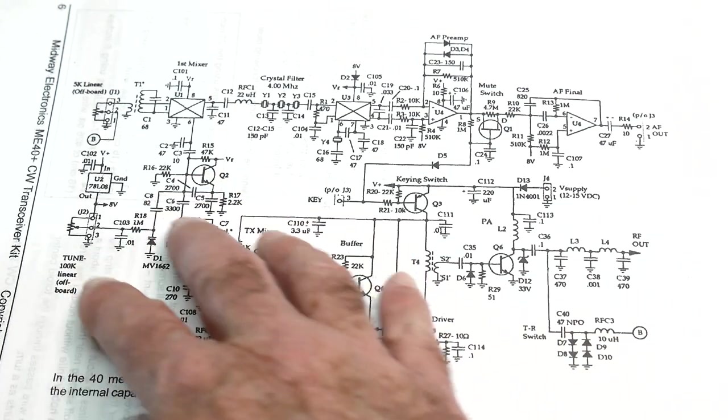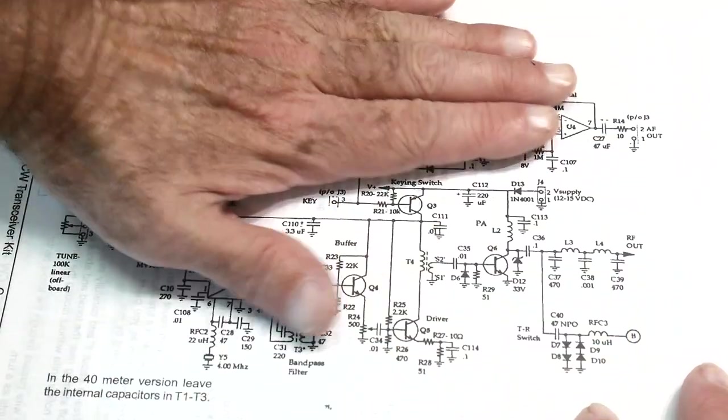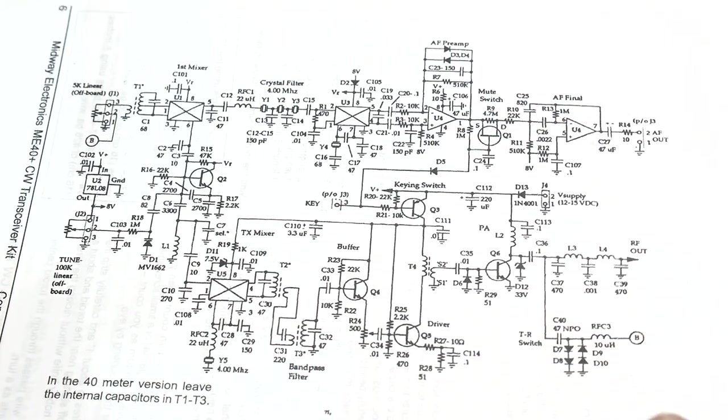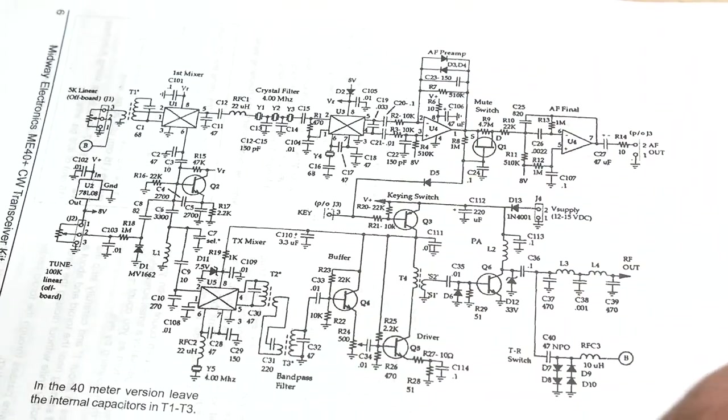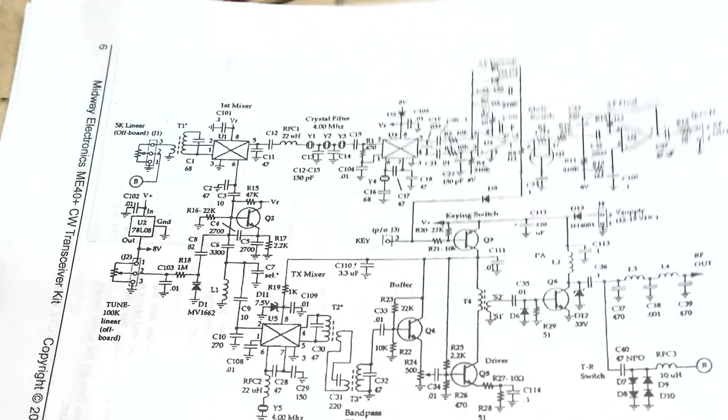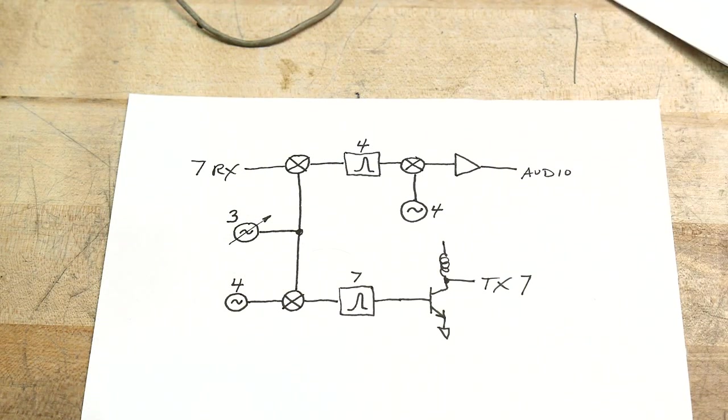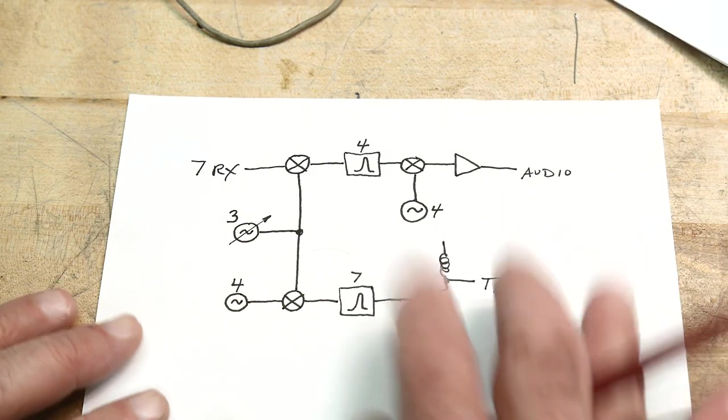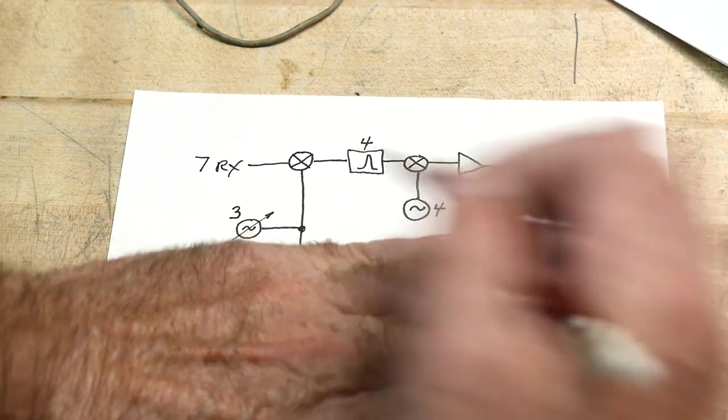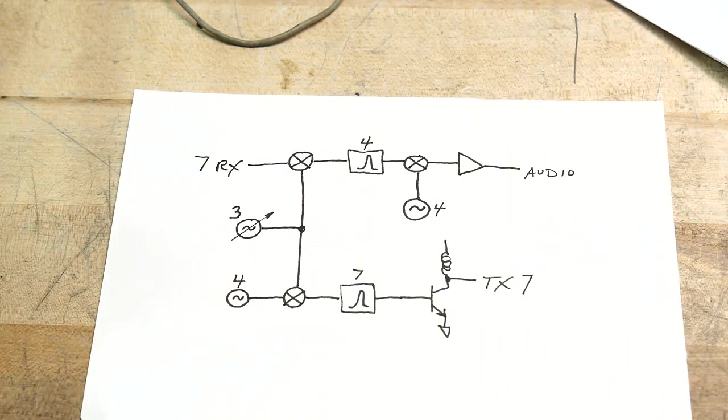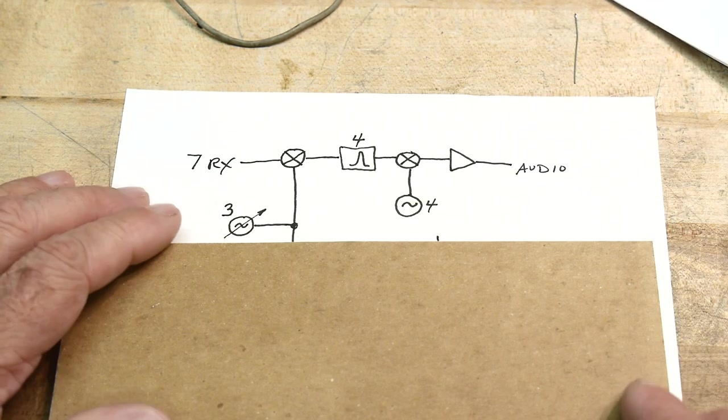There's a transmit section here and a receive section here. This is a bit too complicated. You can probably download this and take a look for yourself. But let's take a look at the block diagram, which I think is quite clever. We have a receive path.